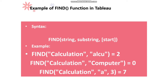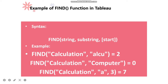FIND returns the position of the character or substring passed within the function. In the second example, FIND('calculation', 'computer') equals 0. Here we passed the substring 'computer', and if you observe 'calculation', there is no string called 'computer'. That's why it returned 0.